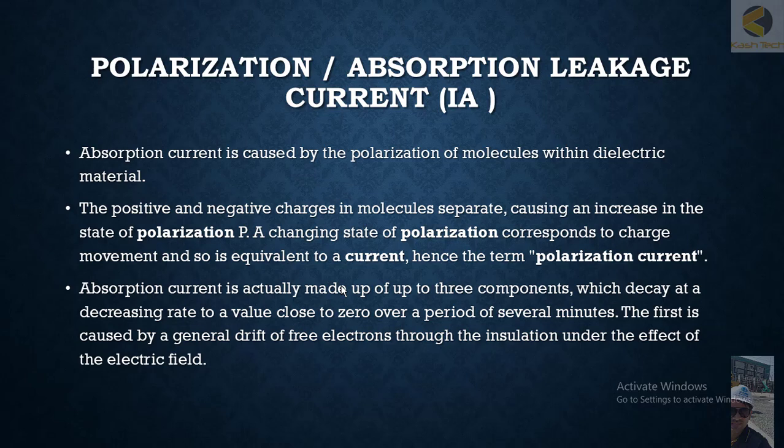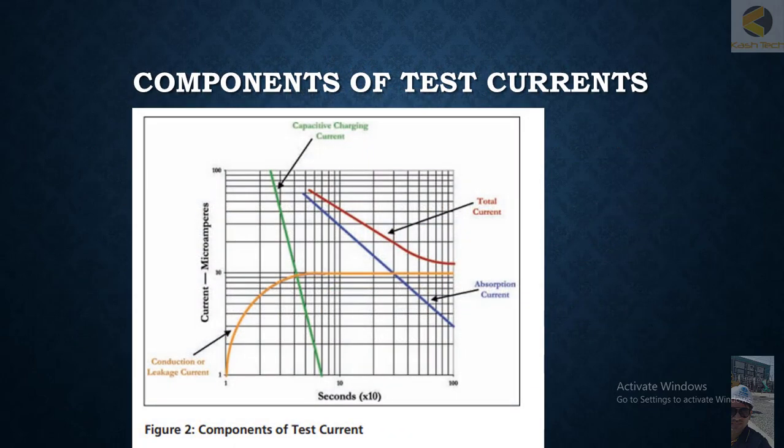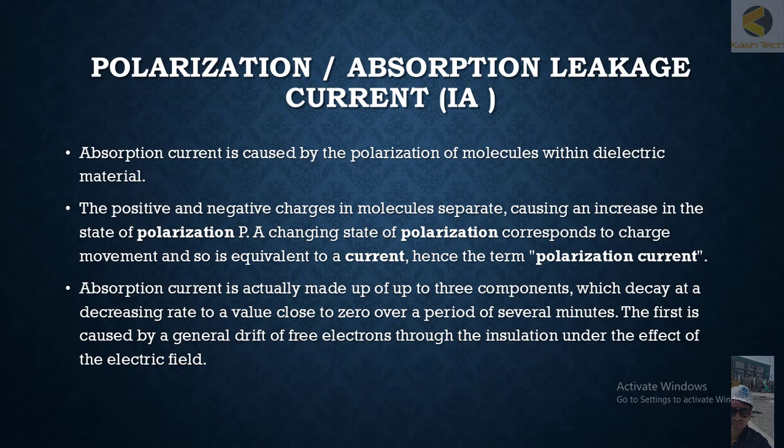Absorption current is actually made up of three components, which decay at a decreasing rate to a value close to zero over a period of several minutes. The first component is caused by the general drift of free electrons through the insulation under the effect of the electric field. The remaining two components will be discussed later in detail.